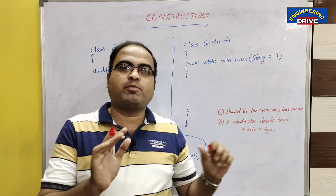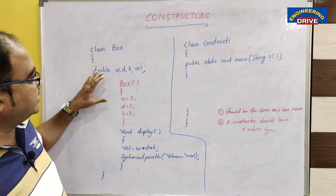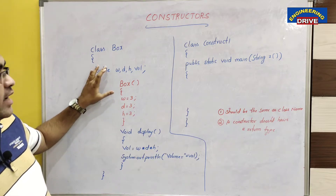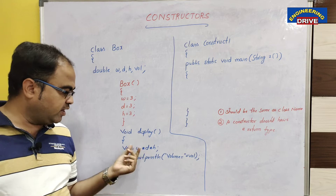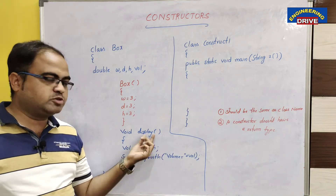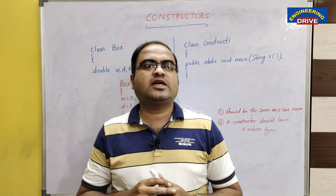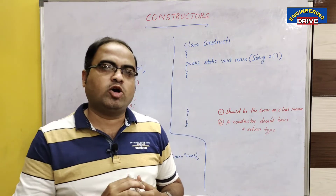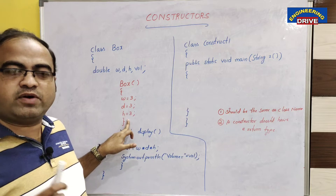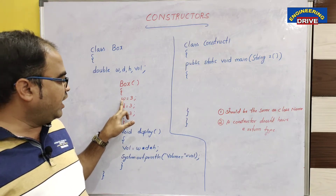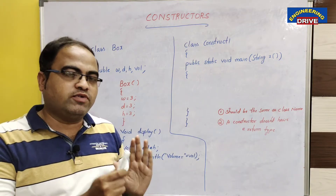For a constructor, you directly write the constructor name, which should be the same as the class name — that is the second point. Now the third point: what is the main purpose of using a constructor? Constructors in Java are mainly used to initialize the variables of the corresponding object automatically. You can see here w, d, h are variables with no values assigned yet. Using this constructor, I am going to initialize w to 3, d to 3, and h to 3.